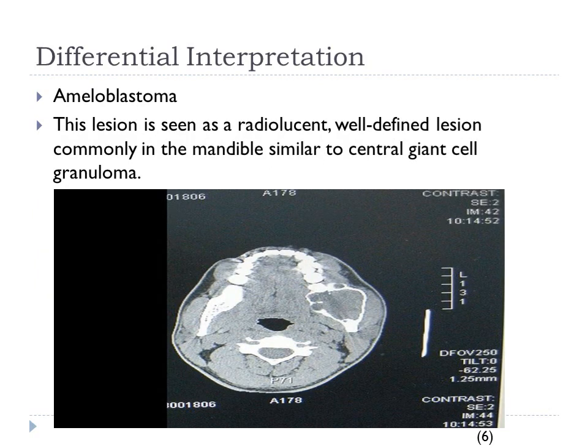The third differential interpretation is ameloblastoma. This lesion is seen as a radiolucent, well-defined lesion commonly in the mandible, similar to Central Giant Cell Granuloma. In the CT scan shown, there is a widened well-defined radiolucency on the left side of the mandible.